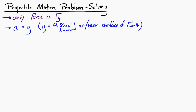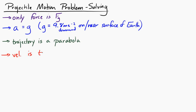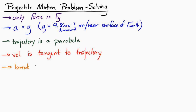The trajectory in projectile motion is a parabola, and the velocity is tangent to the trajectory. The key to solving projectile motion problems is to break the problem into a horizontal part and a vertical part, and to solve those two things independently.